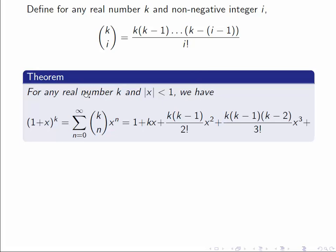Then the theorem states that (1+x)^k equals the sum from 0 to infinity of k choose n times x^n. So this gives us the following infinite series. We can see using the ratio test that this series will always converge for |x|<1. So this formula holds in that case.